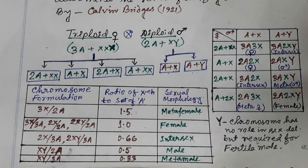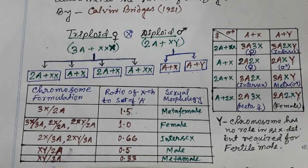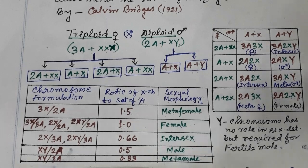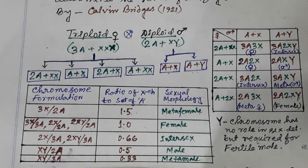This is the genic balance theory of sex determination. Sex determination is dependent on whether the individual is male or female based on the X to autosome ratio.